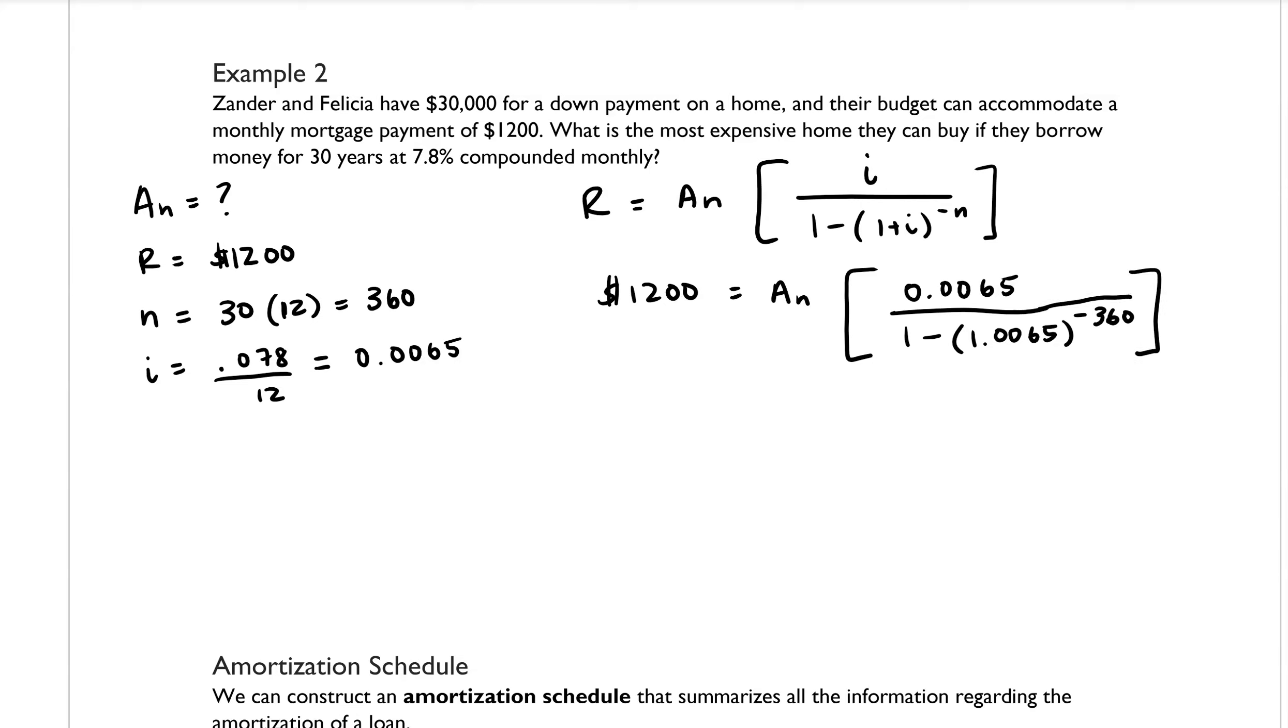Okay, and then if I were to solve that for A sub N, I would multiply both sides by the reciprocal of what is inside the brackets. So we would end up getting that A sub N is equal to 1,200 times the reciprocal, which is going to be 1 minus the quantity 1.0065 to the negative 360th power divided by 0.0065. And if you throw that into your calculator,